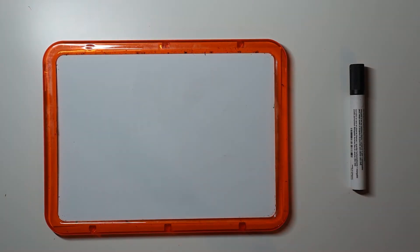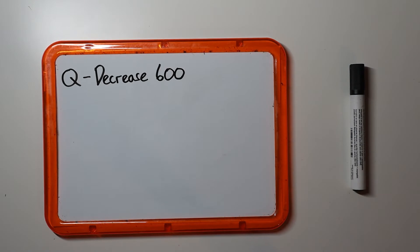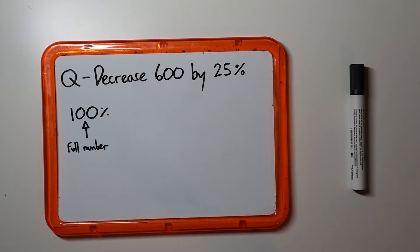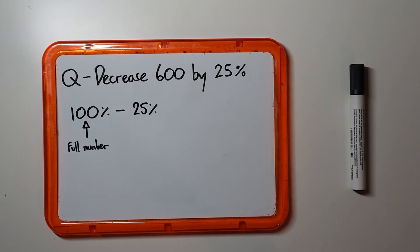So an example question may be decrease 600 by 25%. To do this, we need to take the original 100%, the full number, and subtract the 25%, which is a quarter.